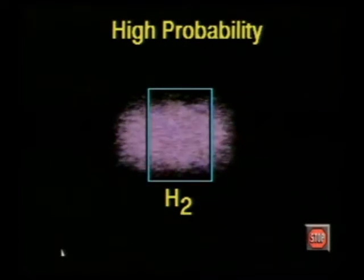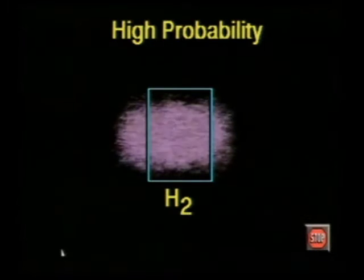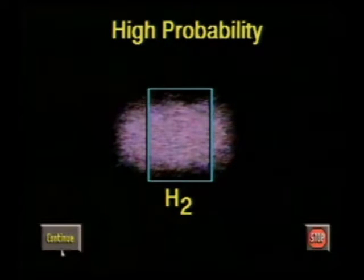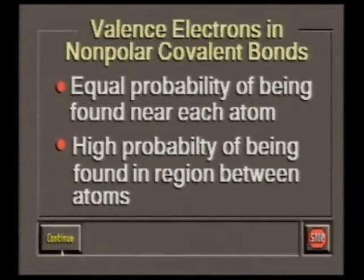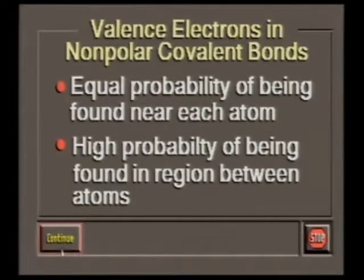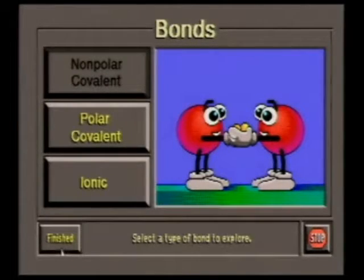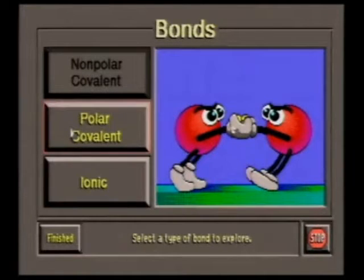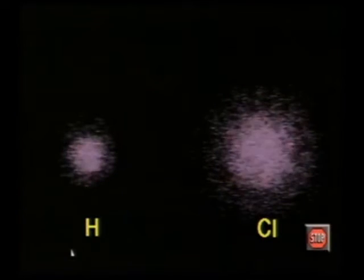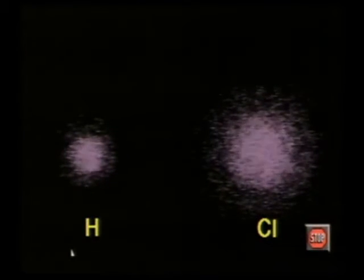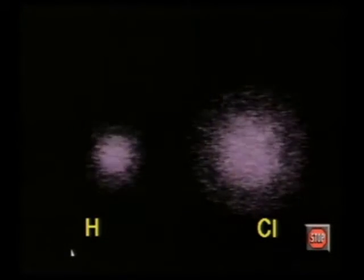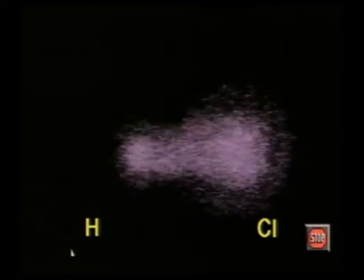However, there is a higher probability that the bonding electrons for these atoms will be found between the two nuclei. When the nucleus of one atom pulls harder than another atom on a shared electron, the bond is called a polar covalent bond.